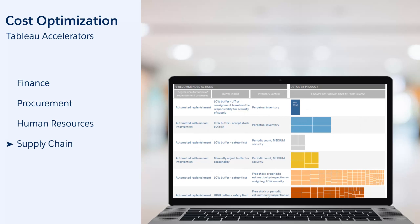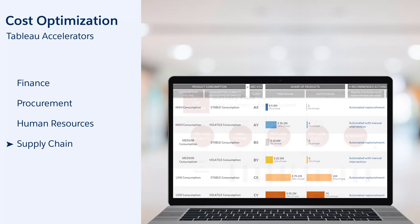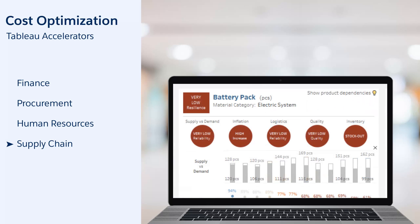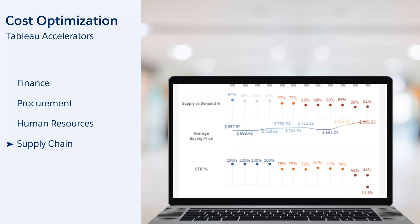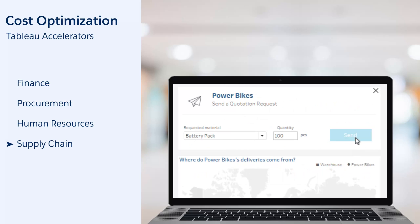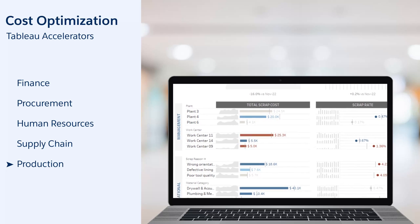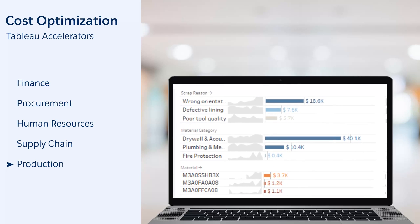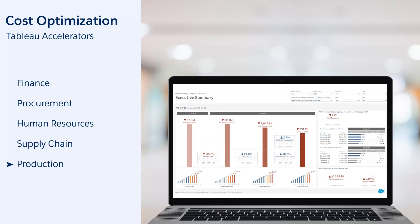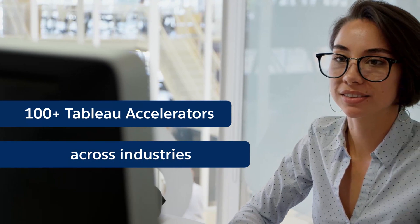Supply Chain: minimize unnecessary spending in your inventory by optimizing your stock coverage. Avoid the financial impact of supply chain disruptions by enabling a new level of collaboration between actors. Production: reduce the impact of scraps by focusing your corrective actions on the most offending scrap reasons. Marketing: cut down investments on campaigns with low profitability. Also discover more than 100 accelerators carefully crafted for you.